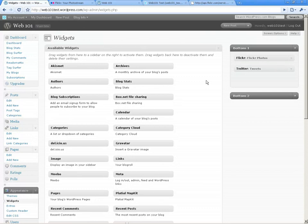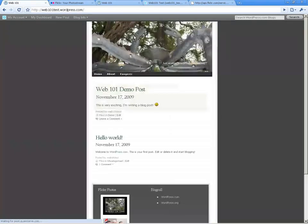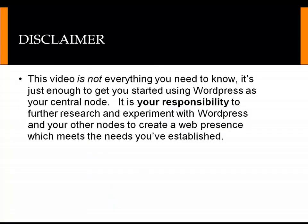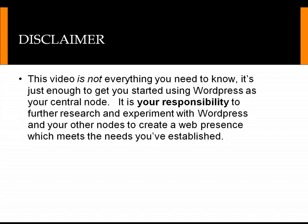Okay, so that's pretty much what you need to know in setting up your WordPress.com central node. We've got blog posts, we've got themes, we've got our pages at the top, and down the bottom we've got links to our contributing nodes — that's the very basics. A quick disclaimer: this video is not everything you need to know, it's just enough to get you started using WordPress as your central node. It is now your responsibility to further research and experiment with WordPress and your other nodes to create a web presence which meets your needs. Work out the finer points: which contributing node are you going to use, what theme, how are you going to link it all together, what's your exegesis and about page going to say — that's up to you.